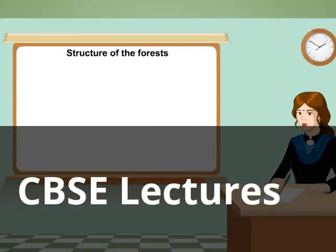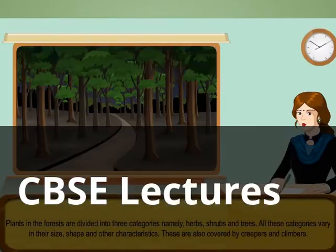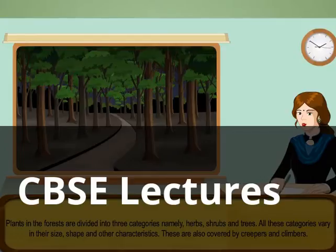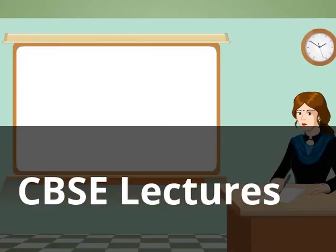Structure of the Forests: Plants in the forests are divided into three categories, namely herbs, shrubs, and trees. All these categories vary in their size, shape, and other characteristics. These are also covered by creepers and climbers.